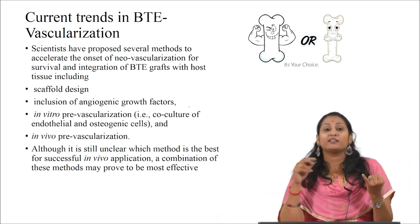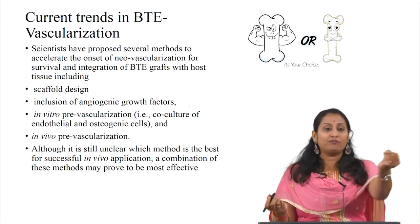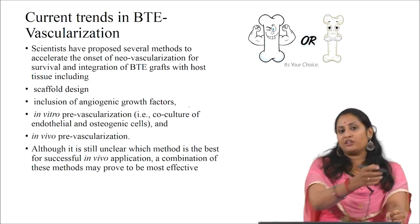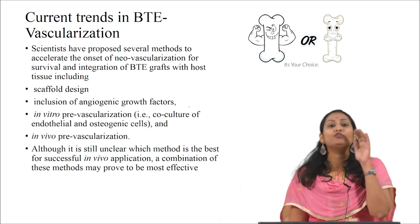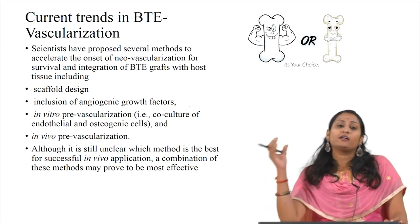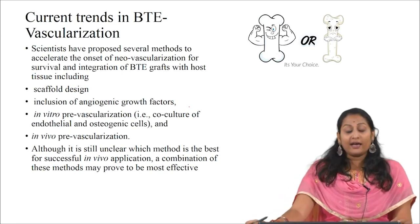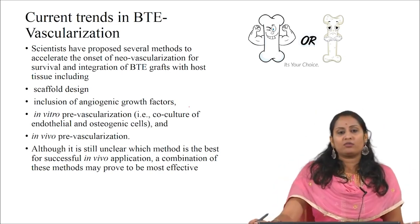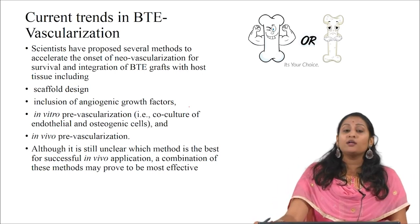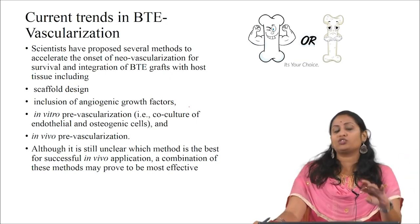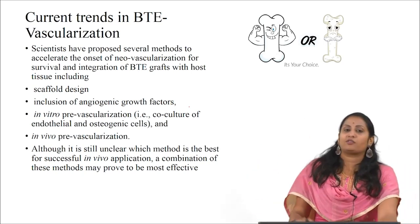To enhance vascularization, strategies include changing scaffold design through advanced fabrication techniques such as 3D printing — for example, biomimetic scaffolds made by fused deposition modeling — and incorporating angiogenic growth factors to enhance endothelial cell activity. There are also two prevascularization techniques: in vitro prevascularization involves co-culture of endothelial cells and osteogenic cells in vitro before transferring to in vivo to assess vascularization.